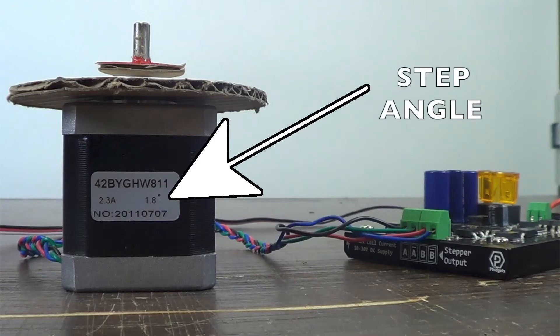Well, if you check the sticker on the side of your motor, or its datasheet, you'll find the step angle of the motor. In this case, it's 1.8 degrees. This means the motor moves 1.8 degrees for every full step.